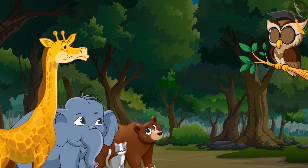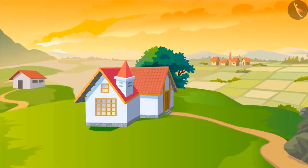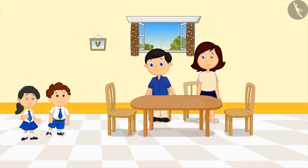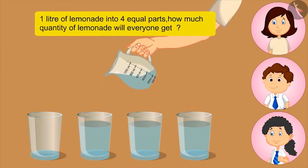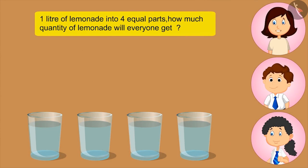Sir, can you give some more examples? Okay, I will recite a story to all of you. Pinky and Bholu live in the village with their parents. Pinky and Bholu got very thirsty while returning from school. Mom, I am very thirsty. Okay, I will make lemonade for everyone. We will also help you. Mother makes 1 liter of lemonade with Bholu and Pinky and fills it in 4 glasses. Now tell me, if I divide 1 liter of lemonade into 4 equal parts, how much lemonade will everyone get?